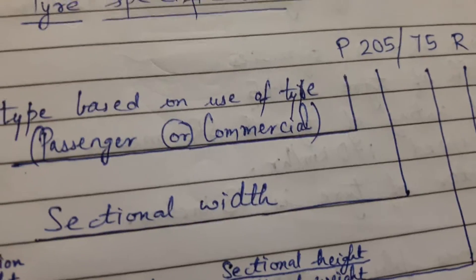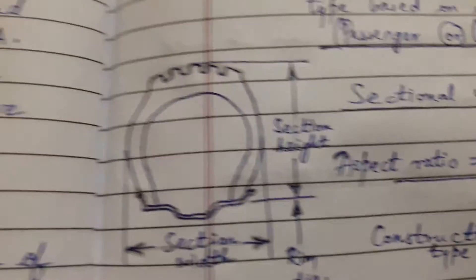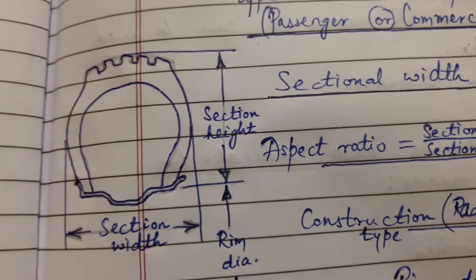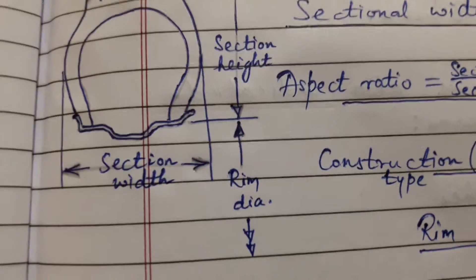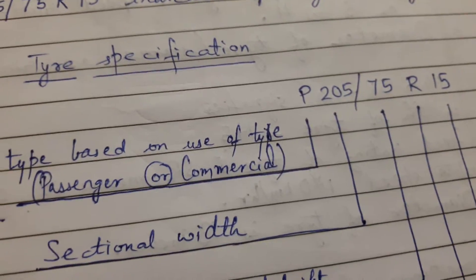205 is sectional width. Let us see what is this sectional width. This is the cross section of the tire. This is the sectional width which you can see over here. So this is 205 mm.